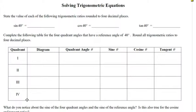So what is the sine of 40 degrees? Round it to four. The sine of 40 degrees is zero point six, four, six, four, two, eight — so 0.6428.